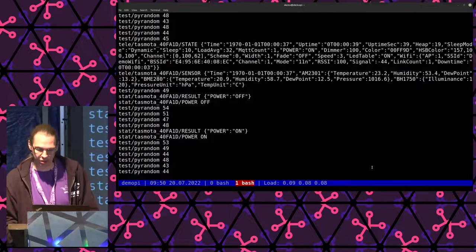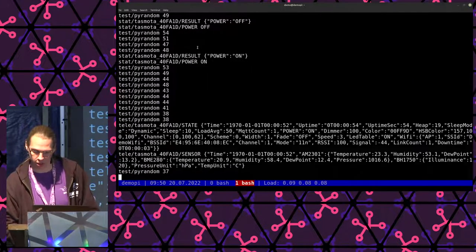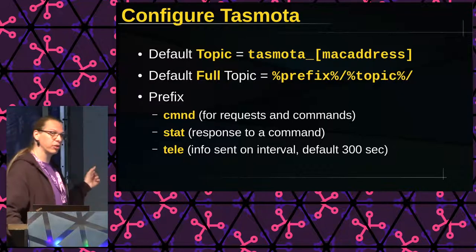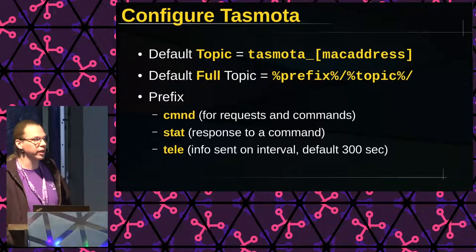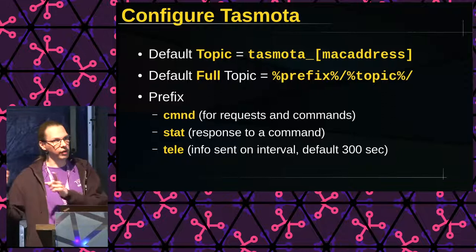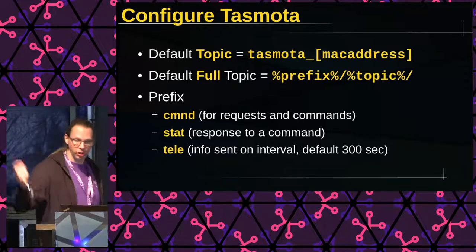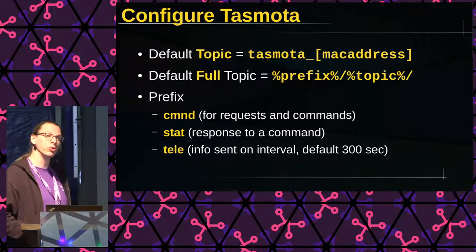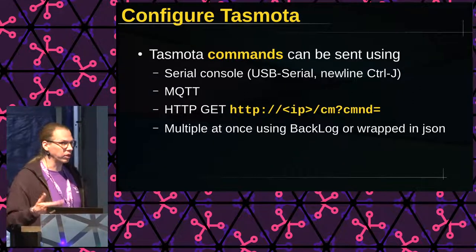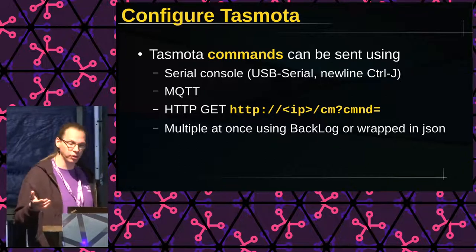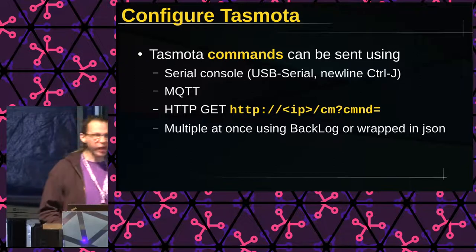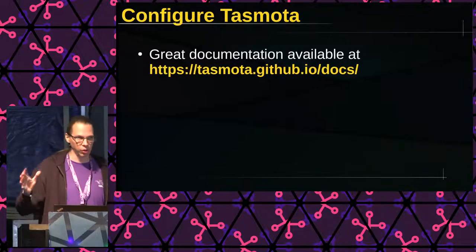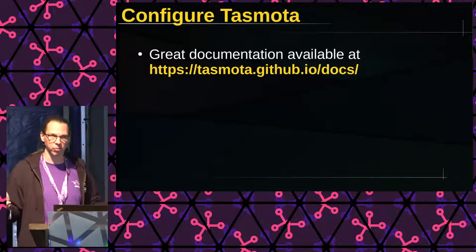We see the MQTT messages using topics, and these topics are defined by Tasmota by default with a prefix that tells you what kind of MQTT messages you'll be getting, and its own name which is 'Tasmota underscore' and the last part of the MAC address. You could change this into anything you want. If something is not included in the firmware as you like, you could actually build your own firmware because this is all open source. You can send commands through MQTT, through the web interface, through GET requests, or the serial console. You can string multiple commands together — there are 150 to 200 different commands.